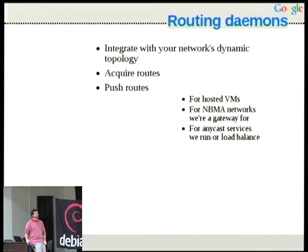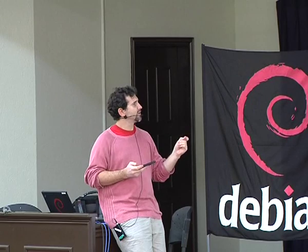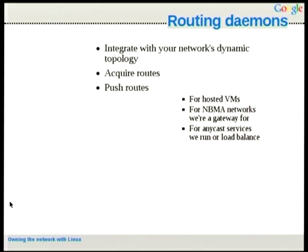Routing daemons. This will basically allow you to configure routing by making various boxes talk to each other — Linux-to-Linux or Linux-to-Router — and acquire routes and push them either to your main network table or to particular tables that you'll then use as described before. We can use these routes just for our host VMs or for our MPLS networks, the GRE tunnels we were talking about. We could use the network daemon to acquire where our VMs are and then push neighbor table entries for them.